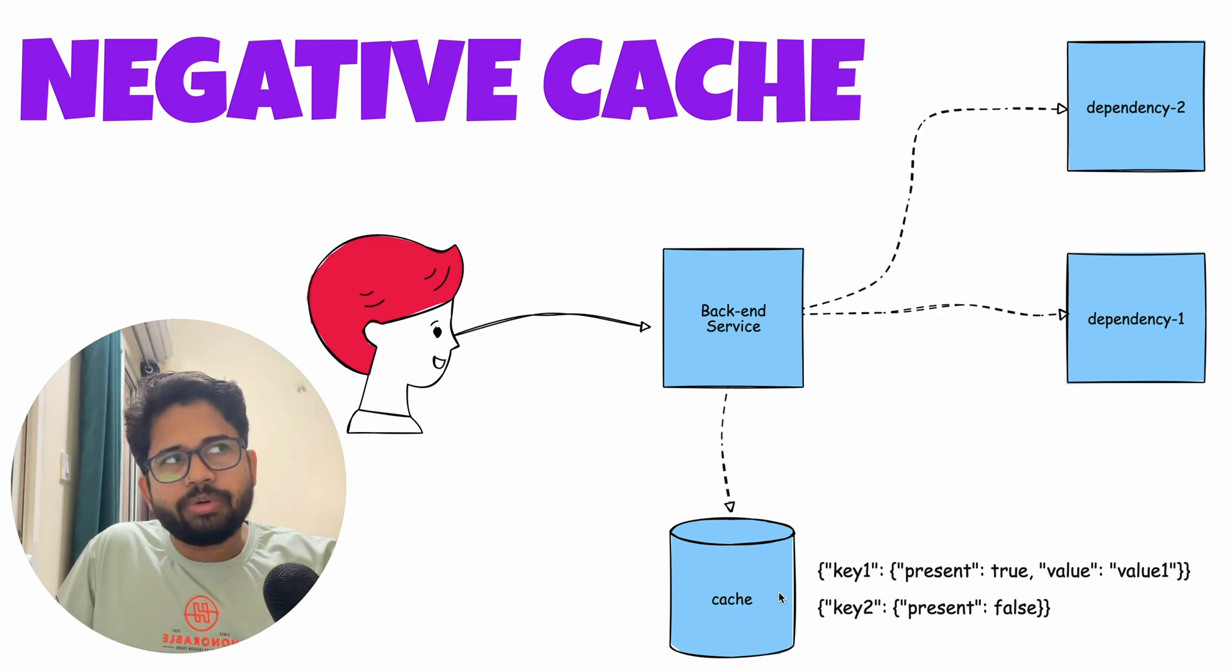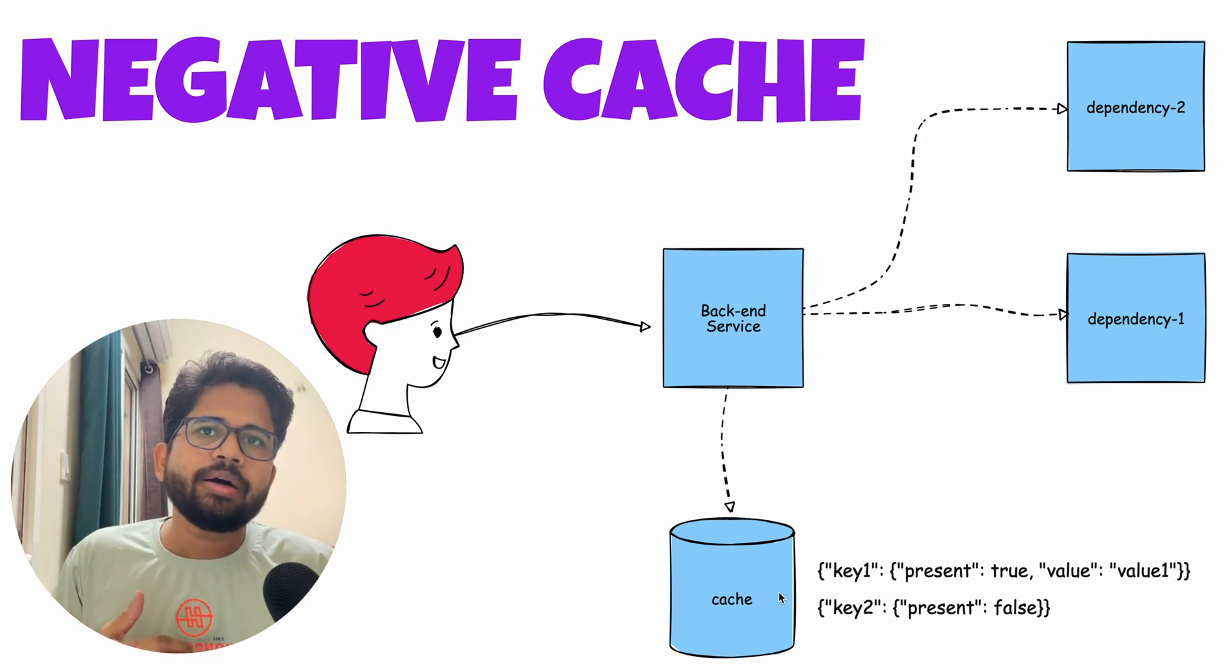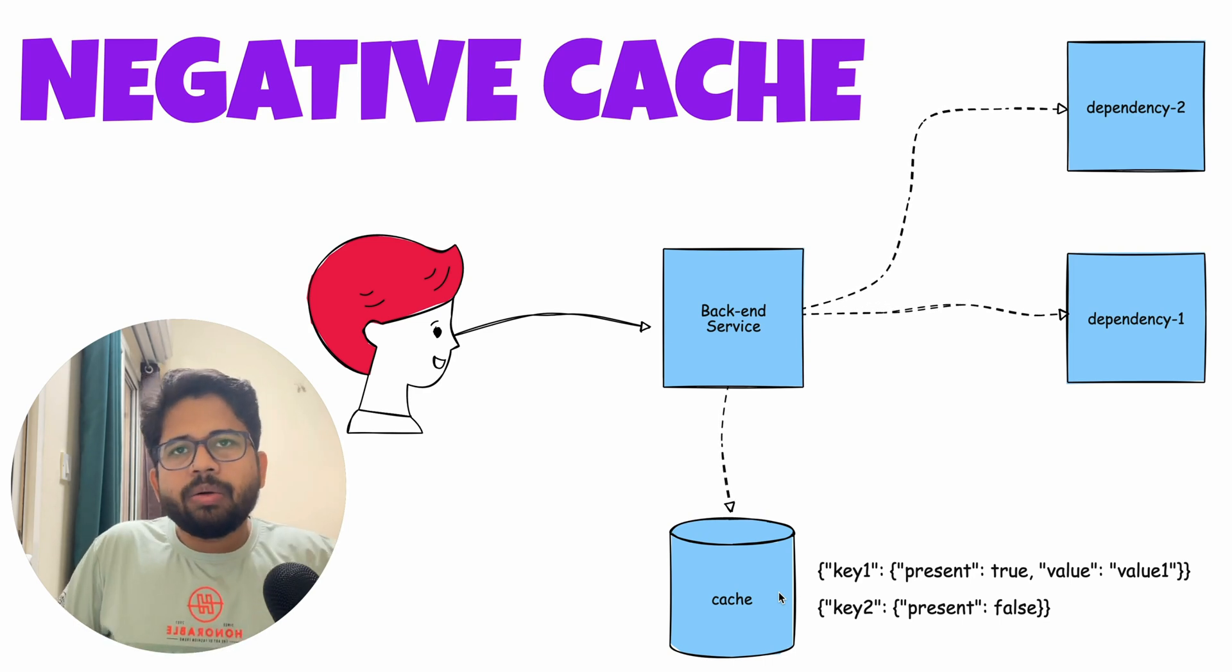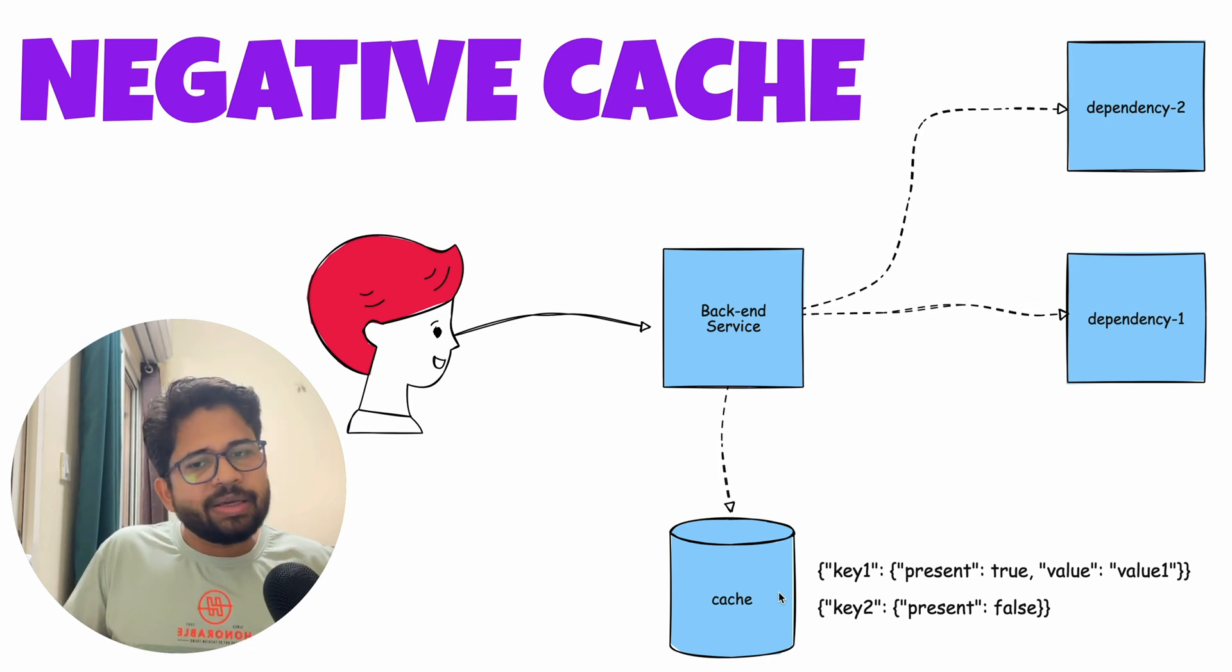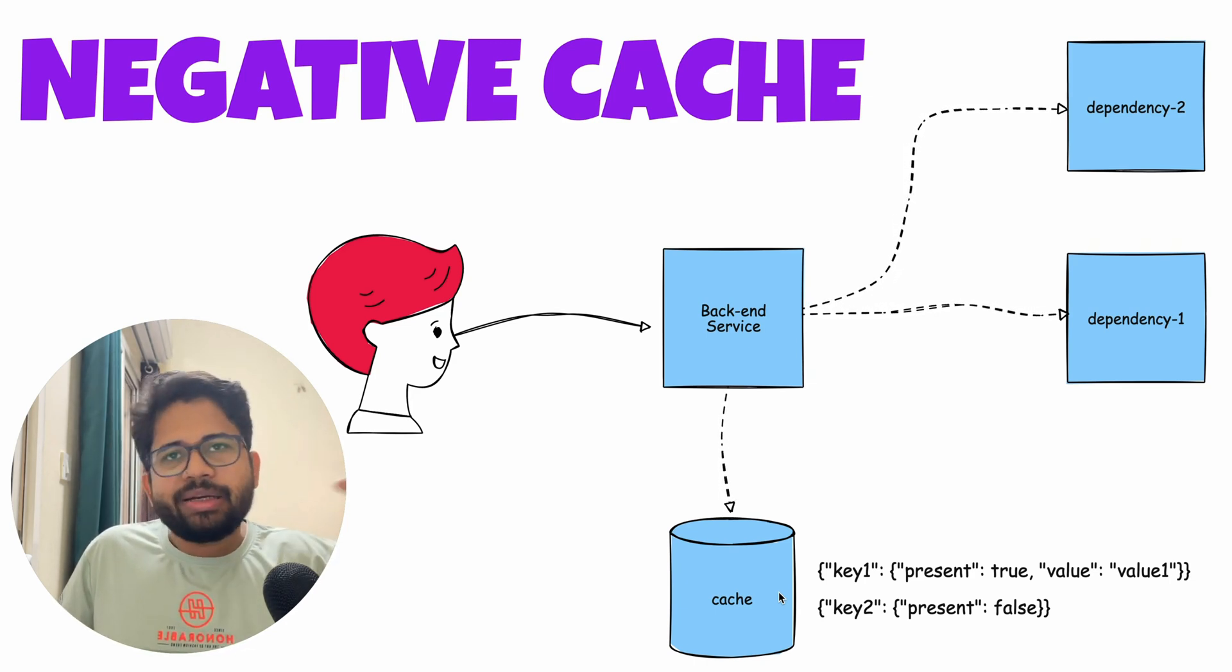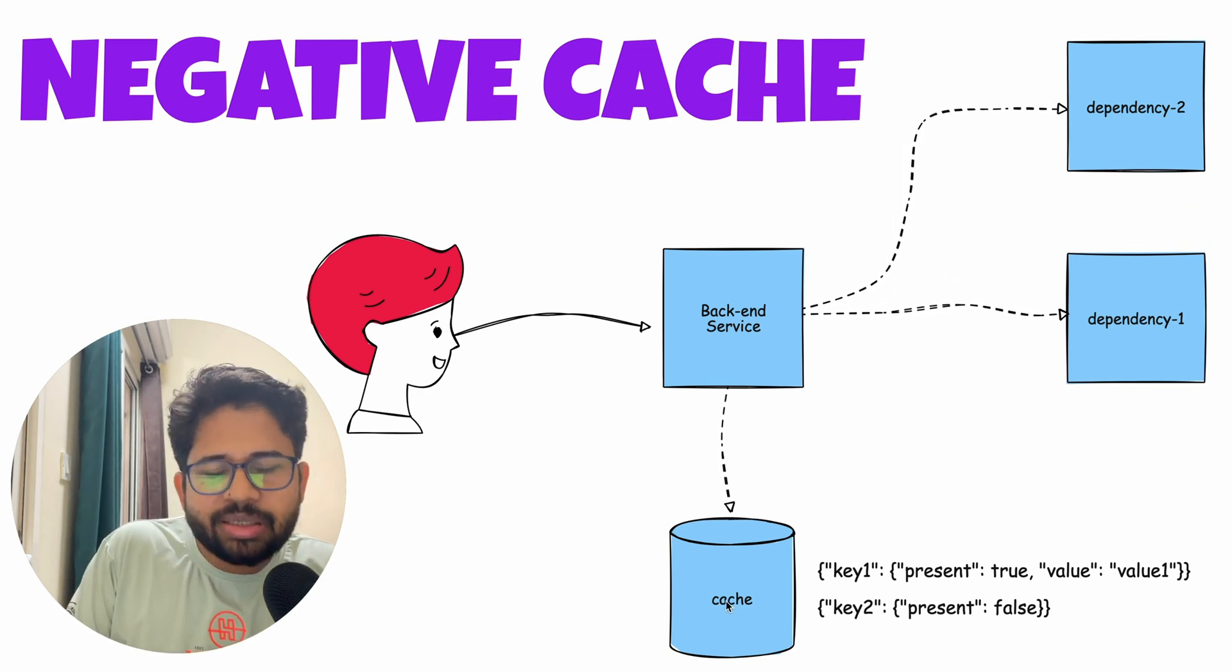For example, if you try to get a user email for a username, people can try to bring your system down by calling your API with random user IDs which do not even exist. And in those cases, you will make calls to the backend system and you might find a username email, and in those cases, you will cache it.